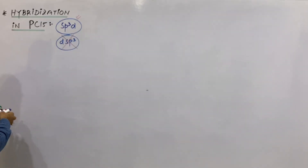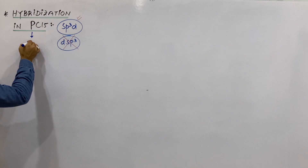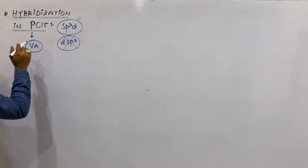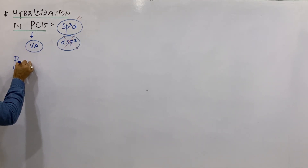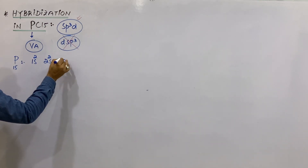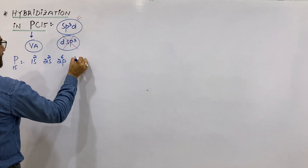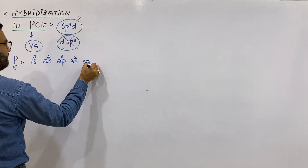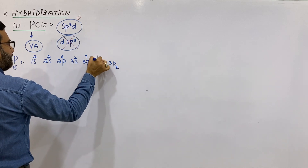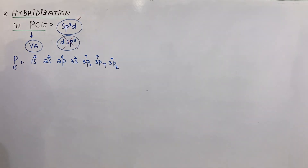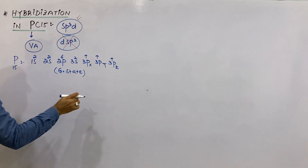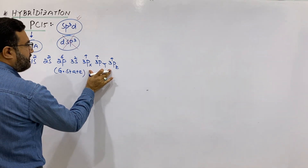Phosphorus belongs to group 5A. It is a member of the nitrogen family, so it will have 5 valence electrons. The atomic number of phosphorus is 15. Its electronic configuration is 1s2, 2s2, 2p6, 3s2 and 3p3. This is the electronic configuration of phosphorus in the ground state, in which it has 3 unpaired electrons, meaning it is trivalent in nature.